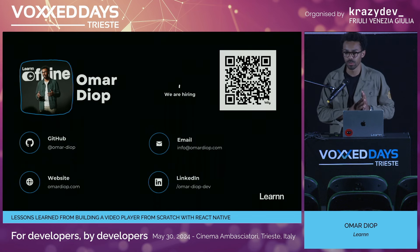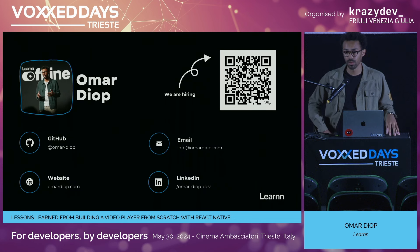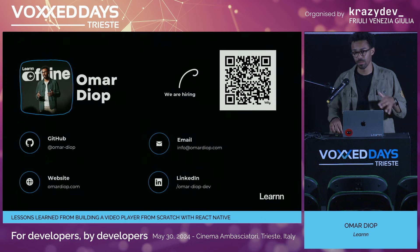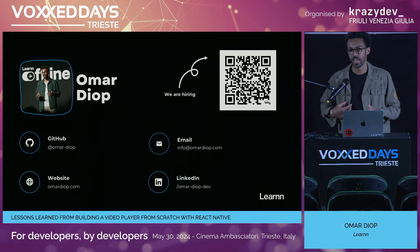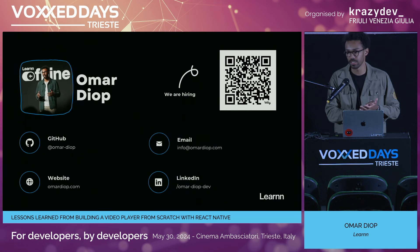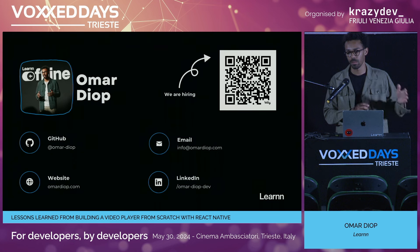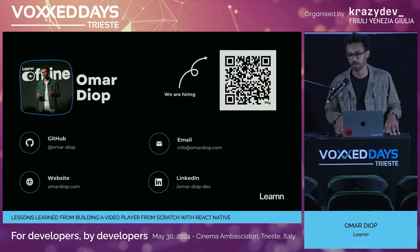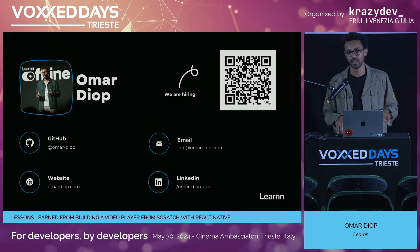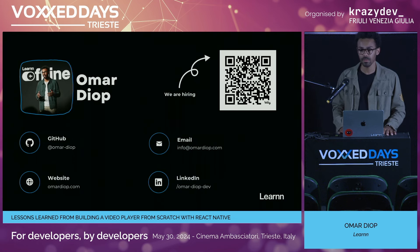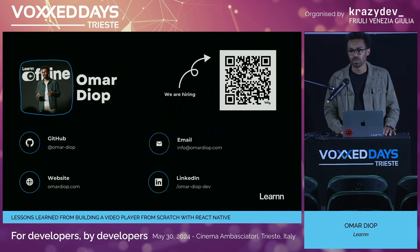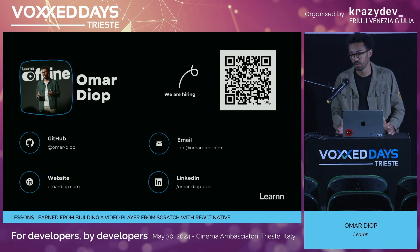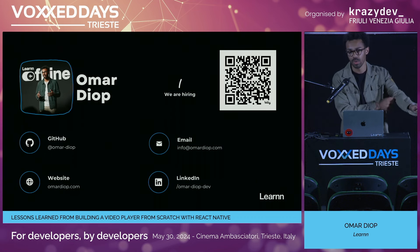Q&A — on offline/download: this is a common feature request that we haven't implemented yet. It's technically feasible, but the main problem is rights management — you'd need to implement DRM to prevent users from extracting the downloaded content. It's not our main priority right now as we're scaling the team. The player itself wouldn't need many changes since react-native-video already accepts local MP4 files as a source — the main work is implementing the security layer.